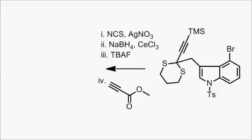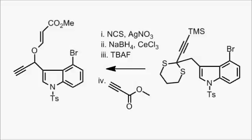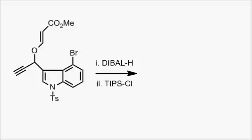Tetrabutylammonium fluoride was used to deprotect the TMS acetylene. Then finally, a reaction with this methylpropiolate formed this species here. And then a few more modifications. Diisobutylaluminum hydride was used to reduce the ester to an alcohol. That was then protected with triisopropylsilyl chloride.